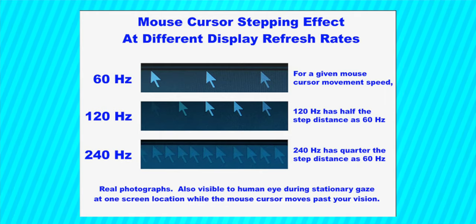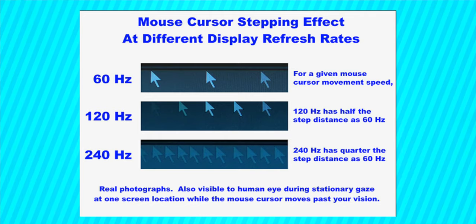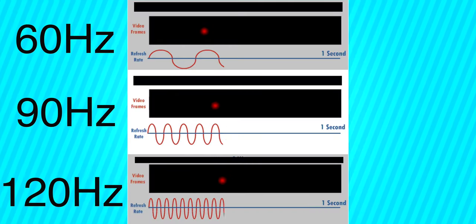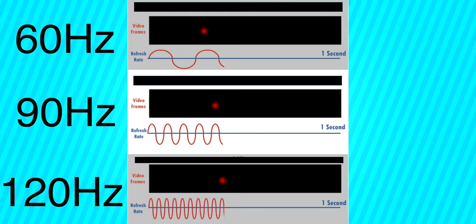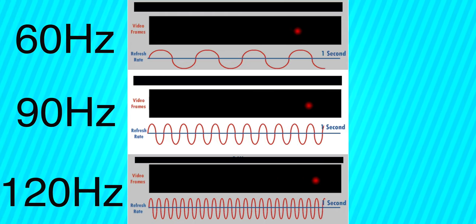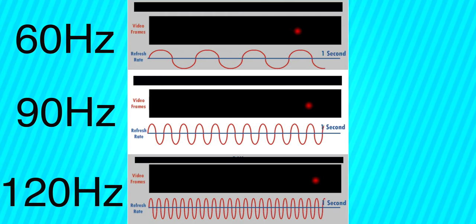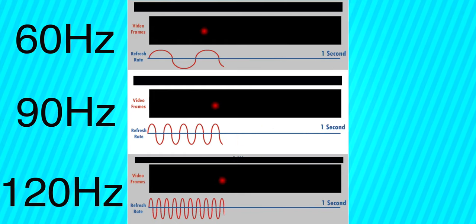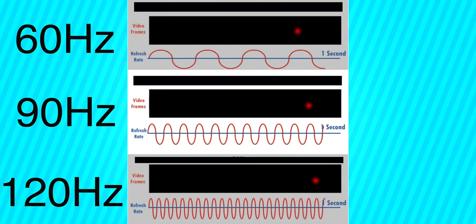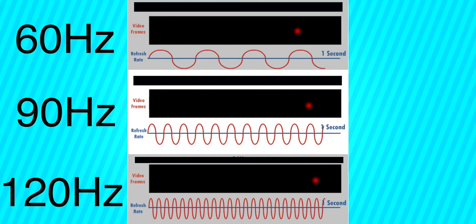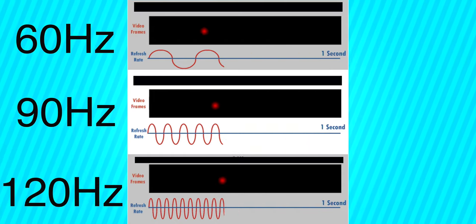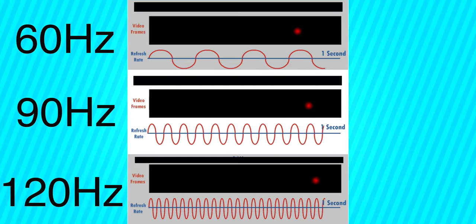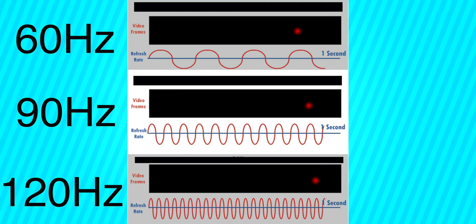Now with the OnePlus 7T, we have a 90Hz refresh rate. So 90Hz means that the OnePlus 7T display refreshes 90 times per second. The ROG Phone 2 has a 120Hz display, which means it refreshes 120 times per second. That's what 120Hz means.